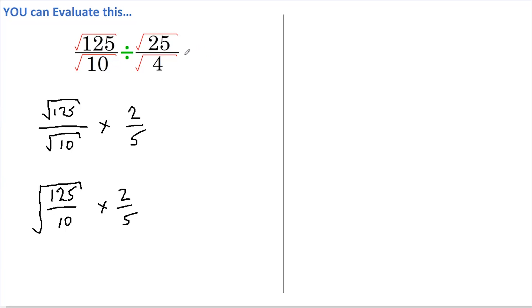Well there is, and the trick is not to get dragged into evaluating this first. Instead we'll rewrite this as root 125 divided by root 10, multiplied by root 4 over root 25.